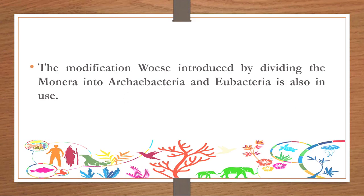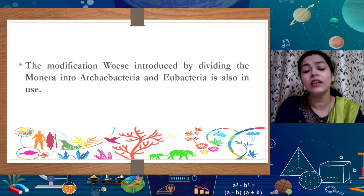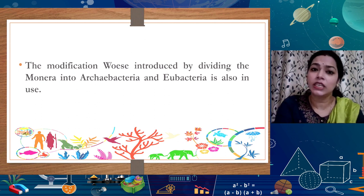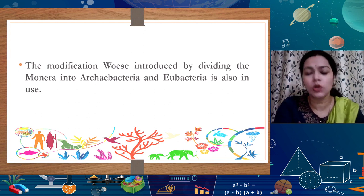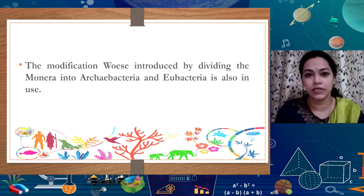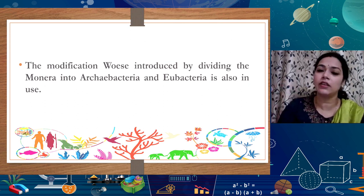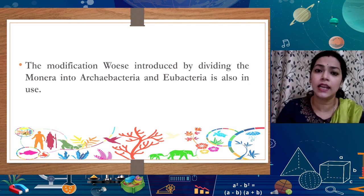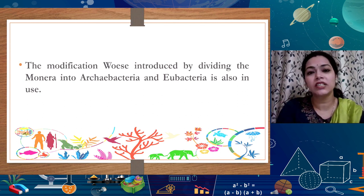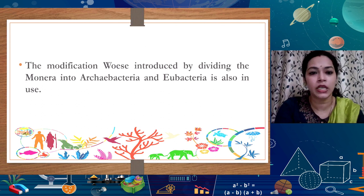In 1977, Carl Woese introduced one more division — he divided bacteria into Archaebacteria and Eubacteria, recognizing the diversity within Kingdom Monera. This classification is also accepted. I will not go into detail here as it is covered in higher classes, but I encourage students to explore more about Archaebacteria on their own.